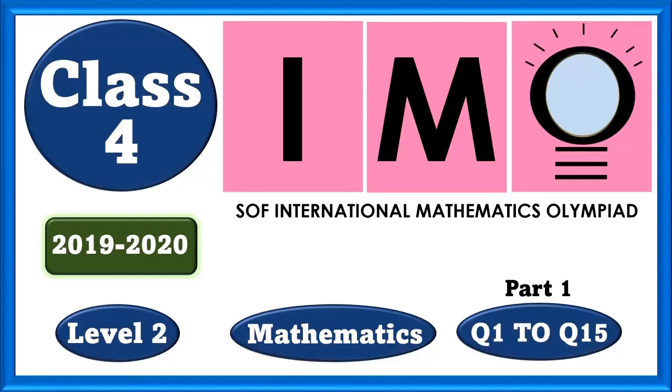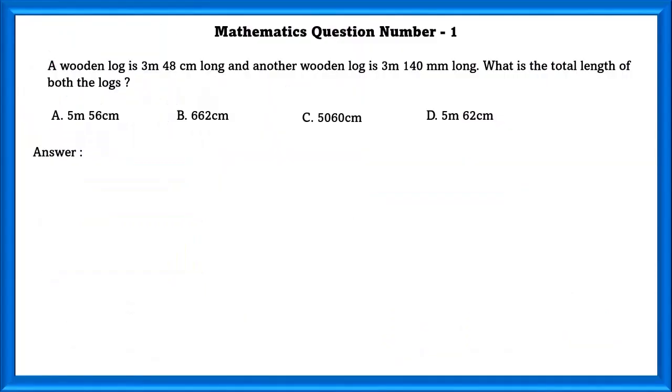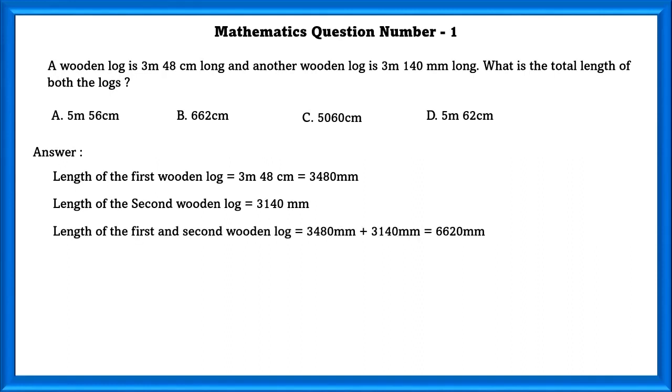Class 4 IMO level 2. Mathematics question number 1. A wooden log is 3 meter 48 centimeter long and another wooden log is 3 meter 140 millimeter long. What is the total length of both the logs? Since one log is in a different unit and another log is in another different unit, we are supposed to first convert it all into the same unit and then add or subtract. Converting all to millimeter and then adding we will get 6620 millimeter which is also equal to 662 centimeter.